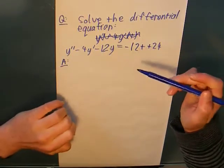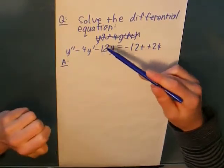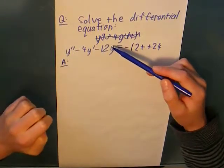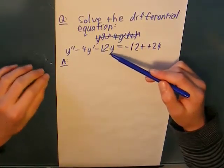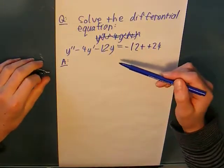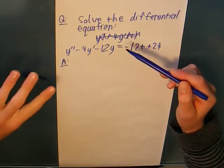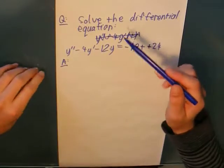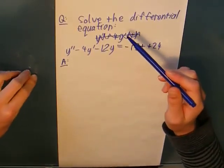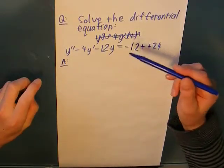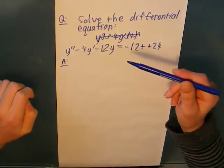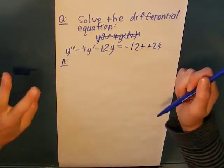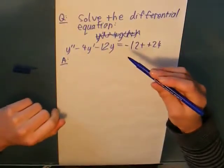Now, in this one, I've used the same left-hand side as in the previous example, so the complementary function is going to be the same, which means that I'm actually only going to find a particular solution, because we all know what the complementary function is, and it's just a simple matter of adding them together. So, let's start.